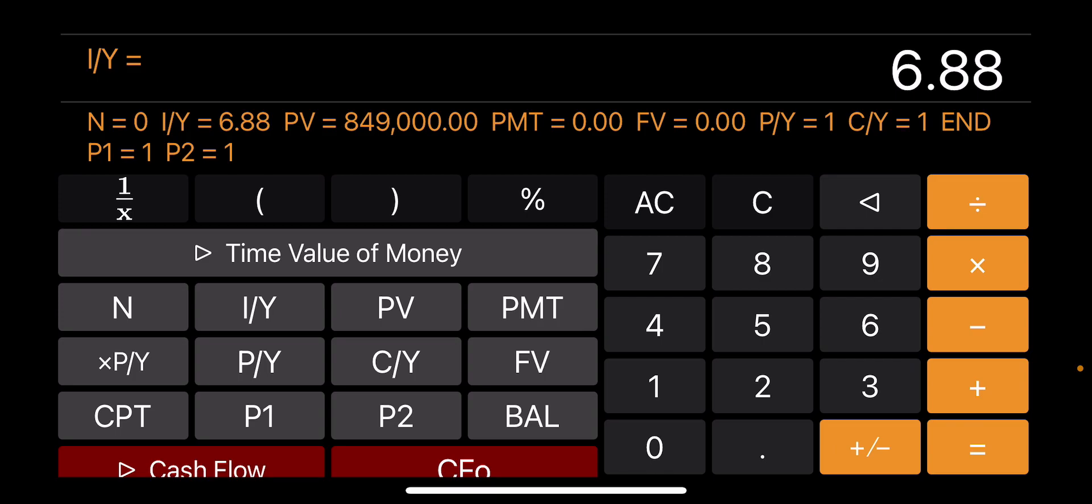And then let's say the mortgage rate today is around 6.875. You press I/Y, which stands for the interest. Then you enter 12 for P/Y, and as you can see, the C/Y is automatically also set as 12, so we won't touch it. And then you can enter 30 for 30 years.